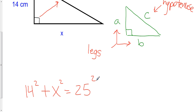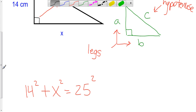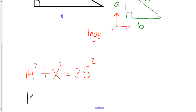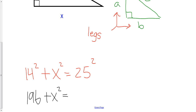I can pull out a calculator and start doing some calculations. 14 squared is 196, so we rewrite this as 196 plus x squared equals 25 squared. And 25 squared is 625, so we have 625 on the right-hand side.